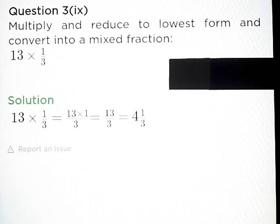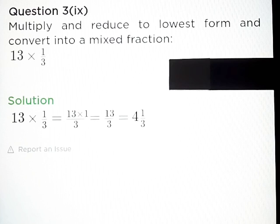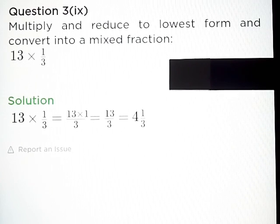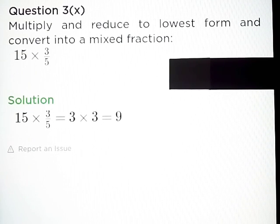Part I: 13 into 1 upon 3 is equal to 13 upon 3, or in mixed fraction it can be written as 4 and 1 upon 3. Part J: 15 into 3 upon 5 — answer: 9.